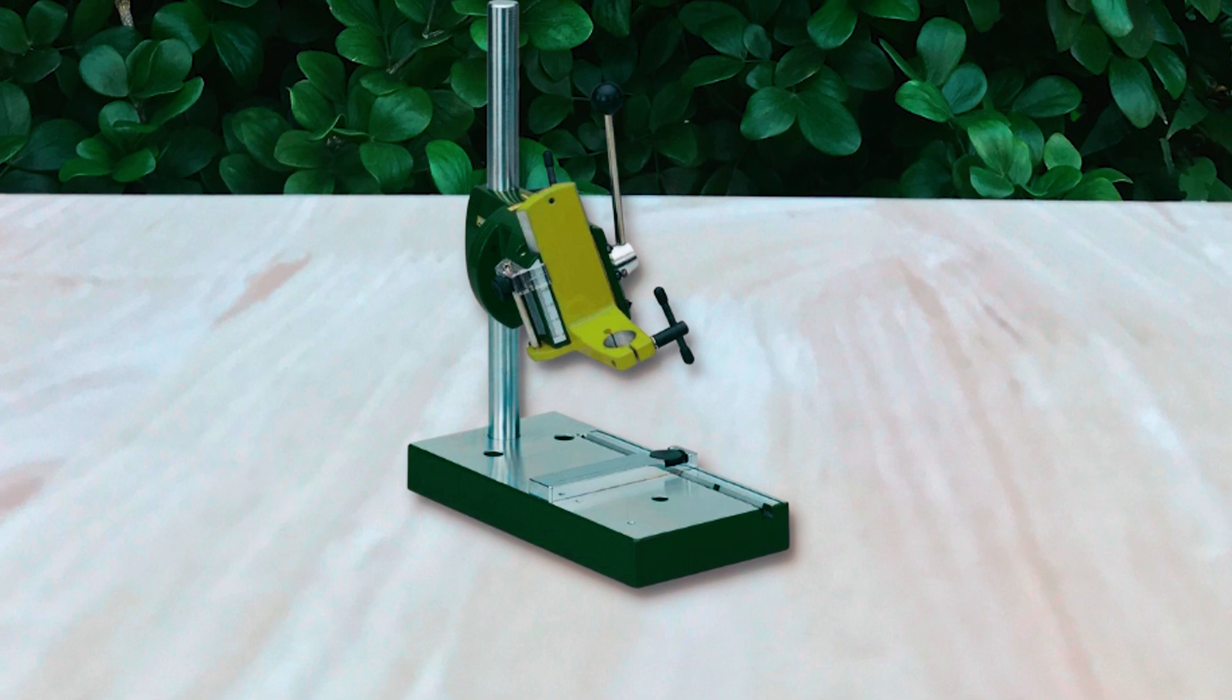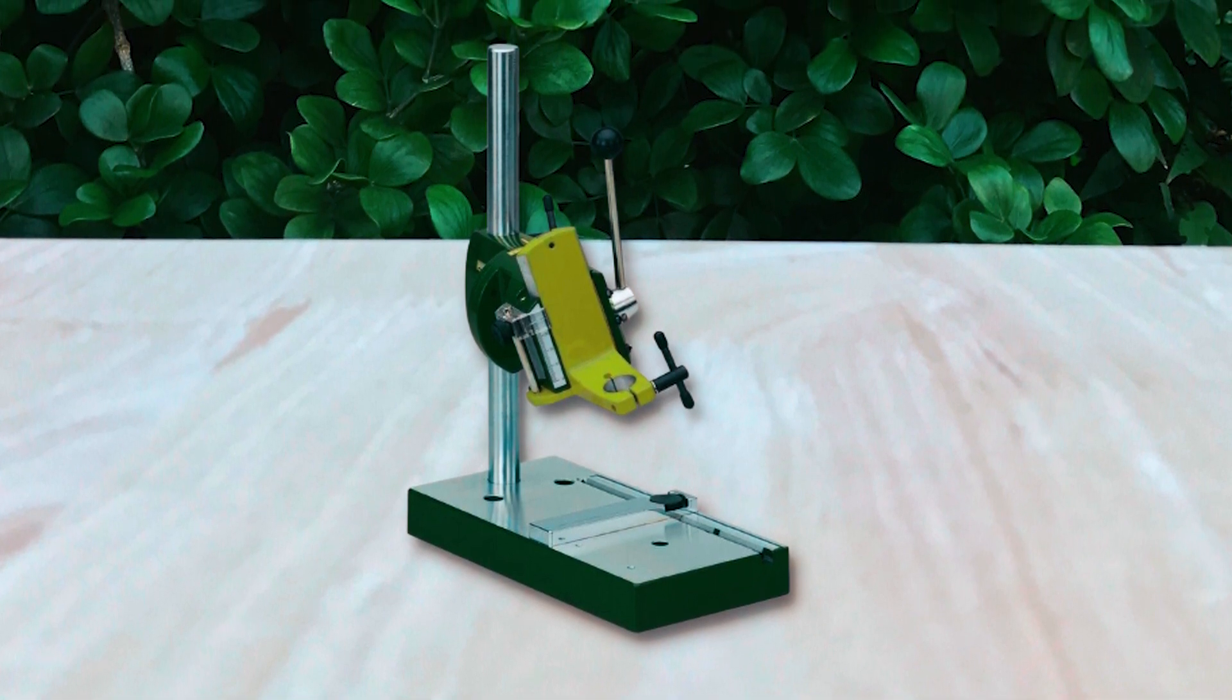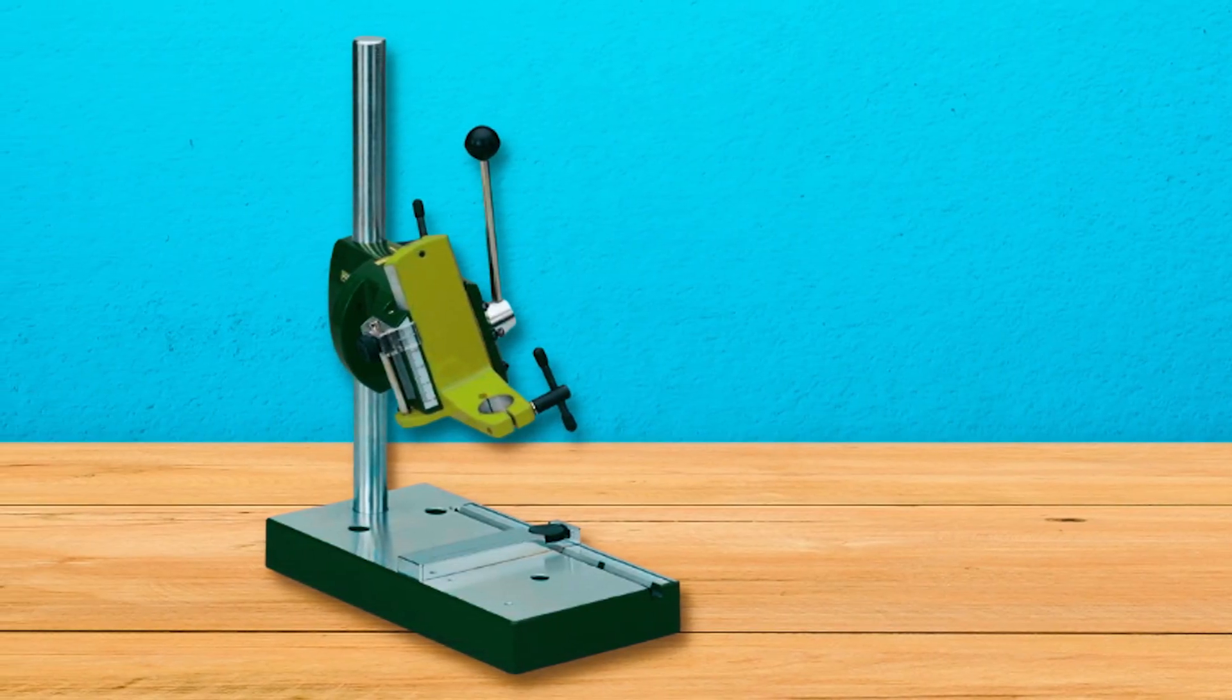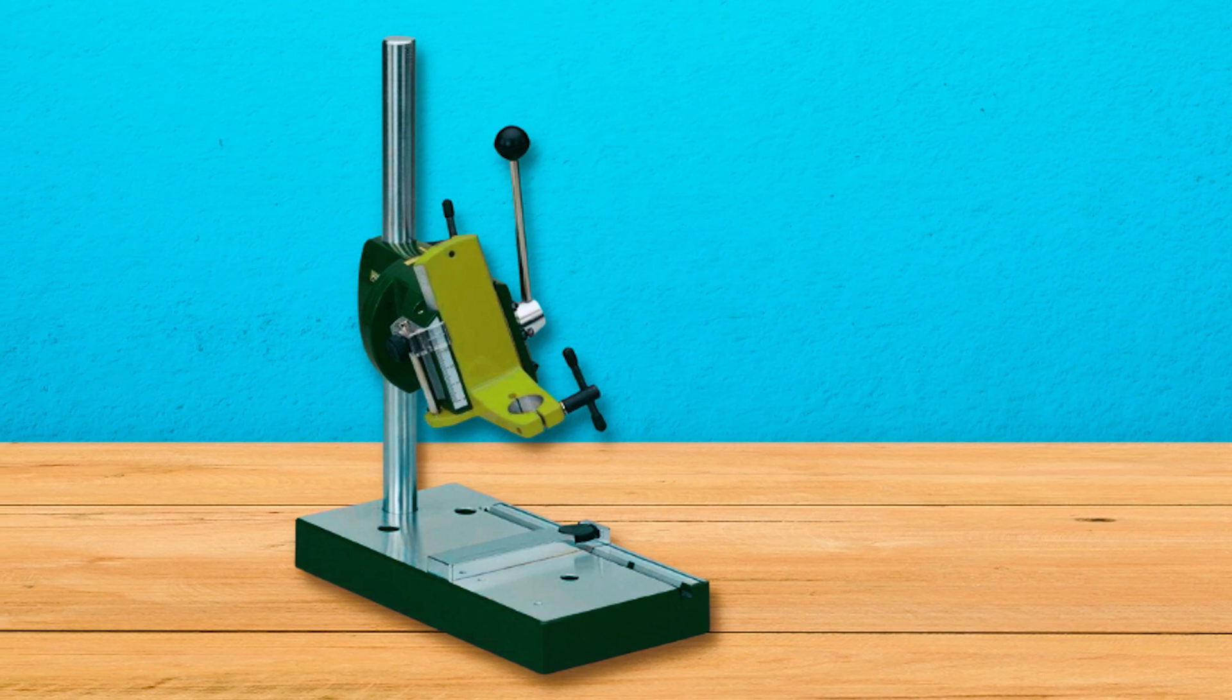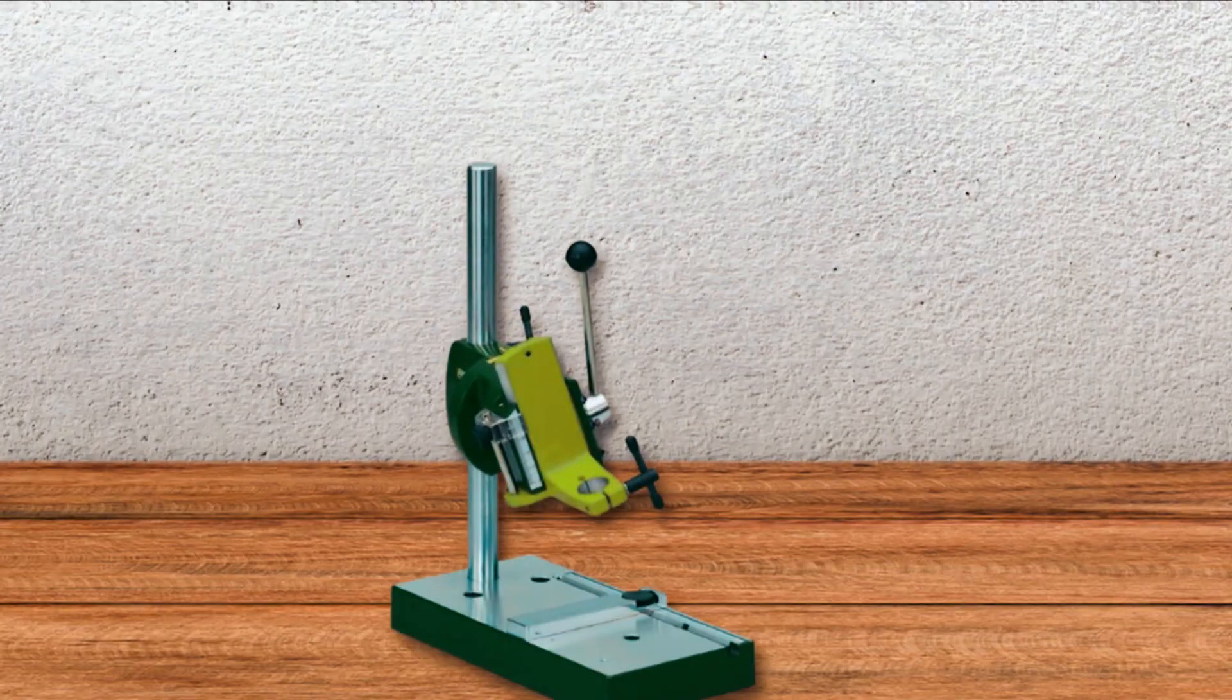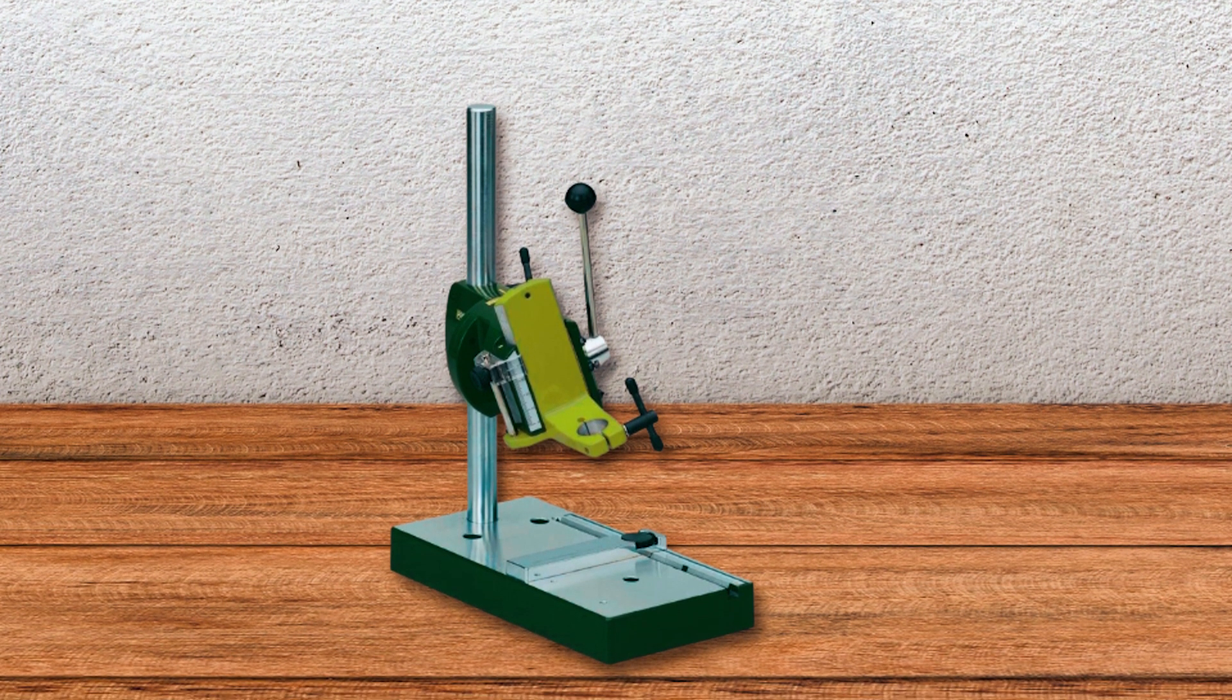The plain milled table is equipped with a parallel limit stop and scale, ensuring accurate alignment and stability during operations. Overall, the Proxen 28600 Micromet Drill Stand MB200 is a high-quality and reliable drill stand that offers excellent performance and versatility for a wide range of drilling and milling operations.